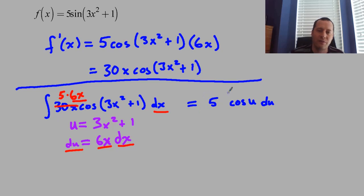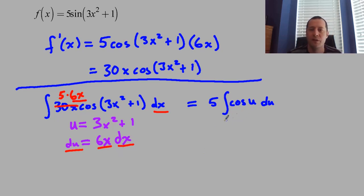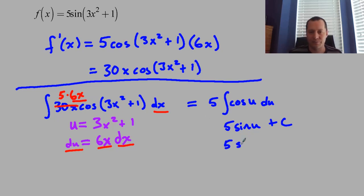We did the substitution and it worked. You have to get du right. The antiderivative of cosine of u du is just sine of u. We still have the 5 in front, plus c. The only problem is we have u, but the original problem was in x, so we substitute back: 5 sine of 3x² + 1 plus c. That's our answer.